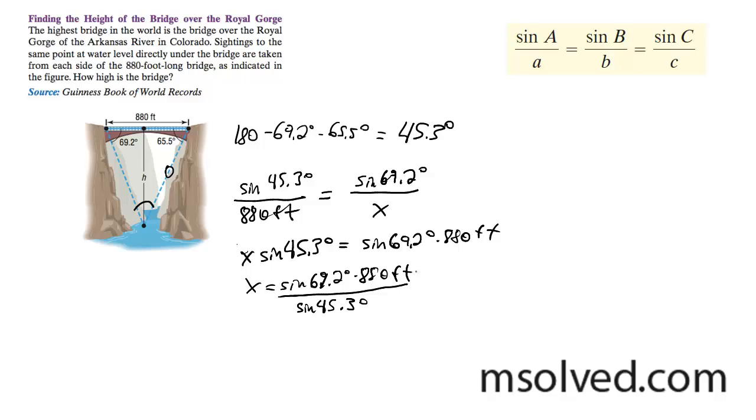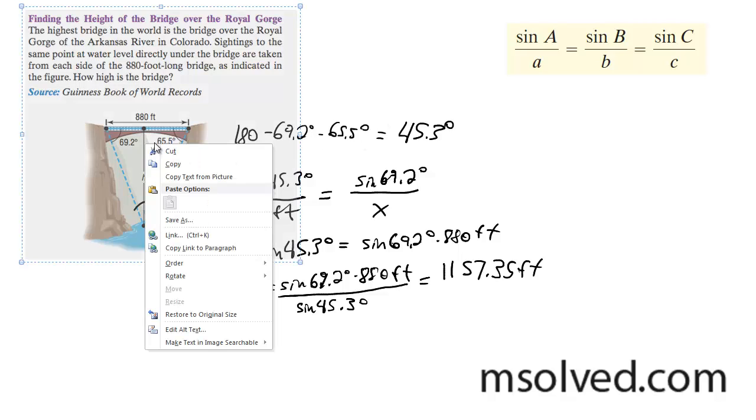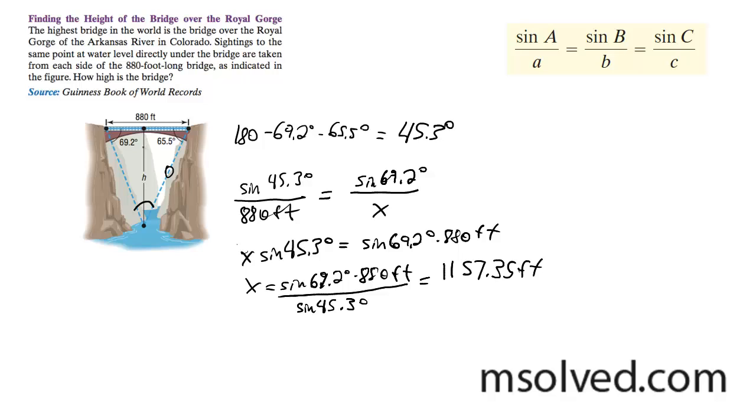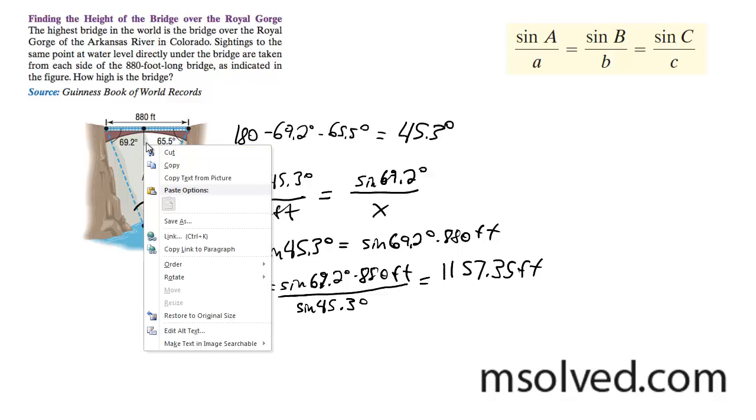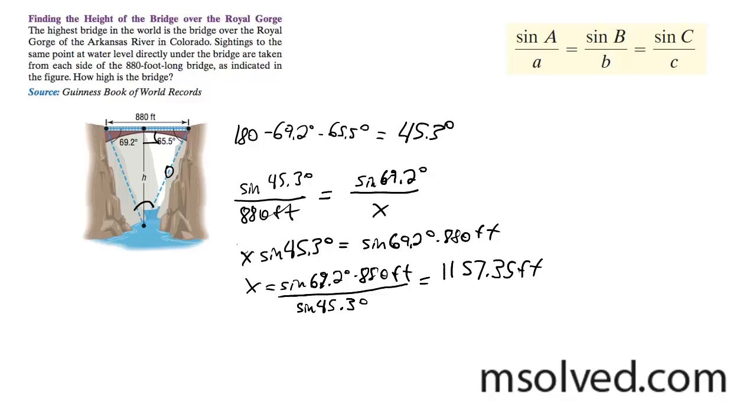And that's going to give us 1057.3 feet. And now what we do next is we have that height. I can go ahead and use this height as a barrier so this becomes a right angle. So this is 90 degrees, this is 65.5 degrees, and this becomes... I don't need to know it, I just need to know these.